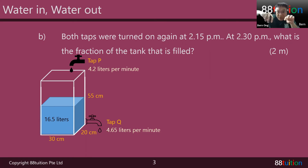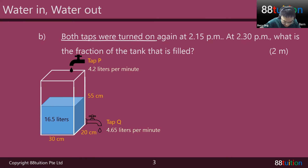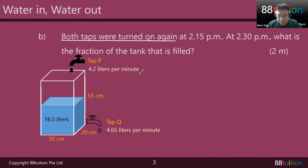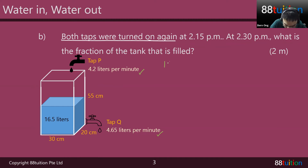So at 2:15, both are turned on again — this time, both are turned on together. At 2:30, what is the fraction of the tank that is filled? In the next 15 minutes, from 2:15 to 2:30, what is happening? In one minute, 4.2 liters is flowing in. In one minute, 4.65 liters is flowing out. But starting at 2:15, I already have 16.5 liters of water in the tank.